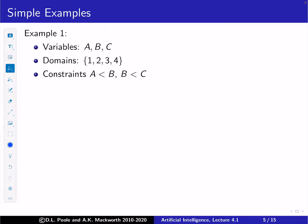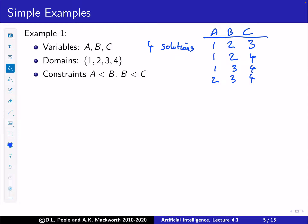As another example, if we have variables A, B, C with domain {1, 2, 3, 4} and constraints A < B and B < C, the solutions are: (1,2,3), (1,2,4), (1,3,4), and (2,3,4). These are the only four solutions to this problem.